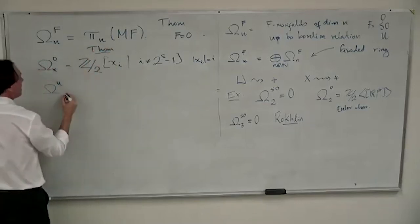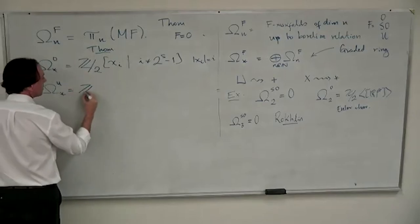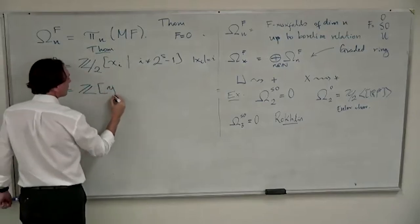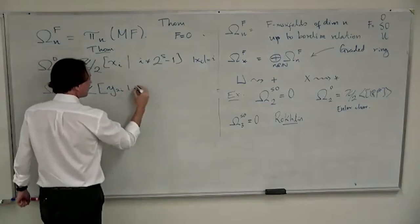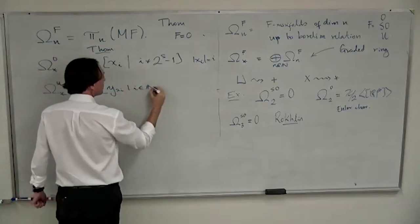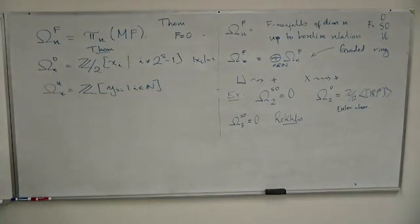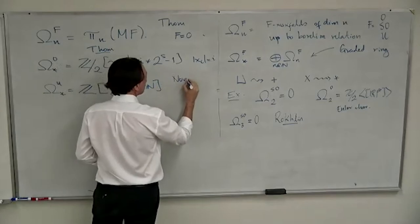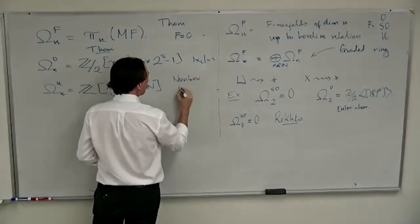This led to showing that the unoriented bordism ring is all Z₂, generated by some classes ξᵢ in dimension i — in some cases these are the real projective spaces, in other cases not — and this comes from the Steenrod algebra. The unitary bordism ring is a polynomial algebra on some generators, one for each even degree.